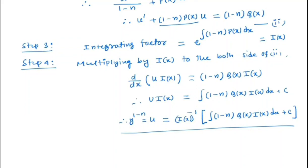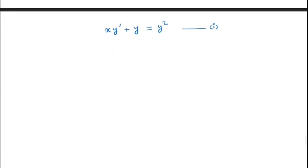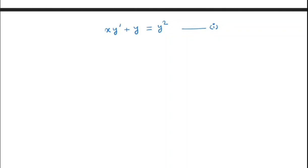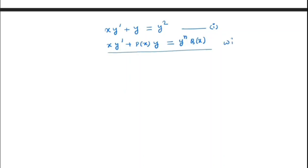Now we will see an example to understand the method clearly. The example is: x y prime plus y equal to y squared. First we need to identify that this is a Bernoulli's equation. We can write it in the general form of Bernoulli's equation, and note that equation 1 is of this Bernoulli's form with n equal to 2.